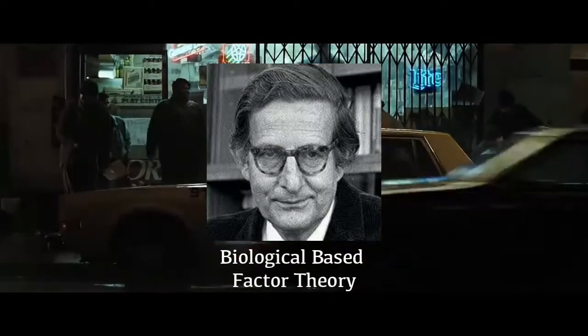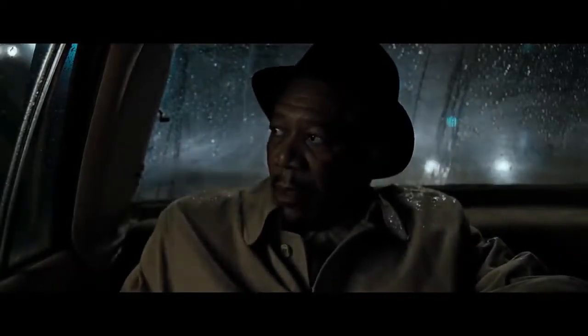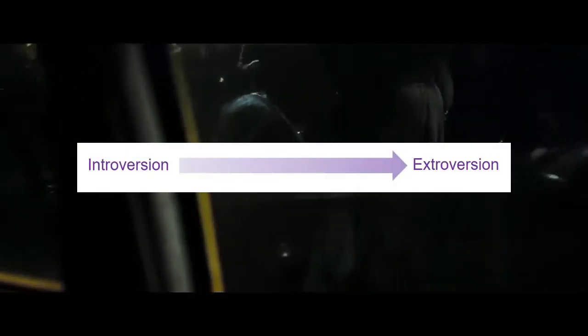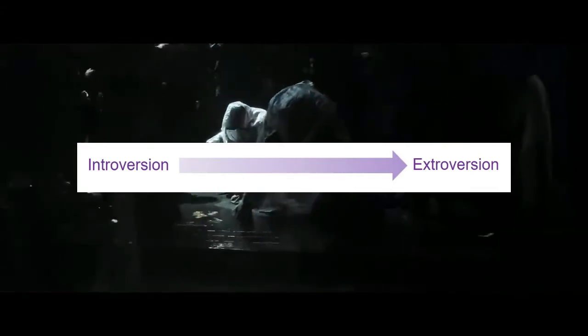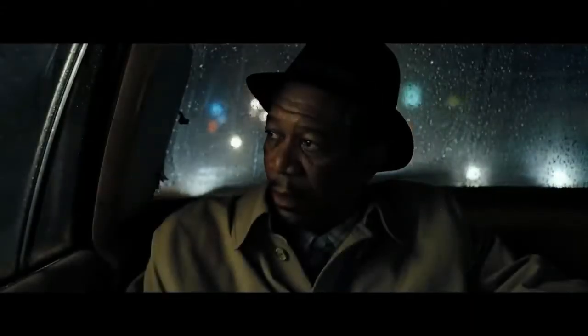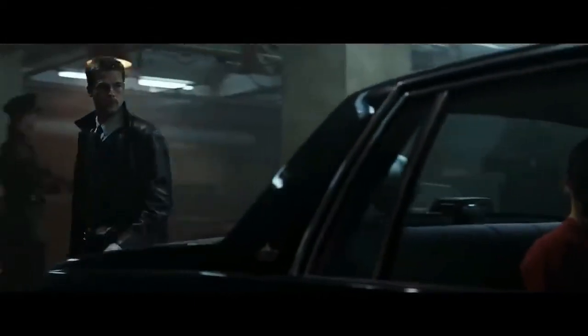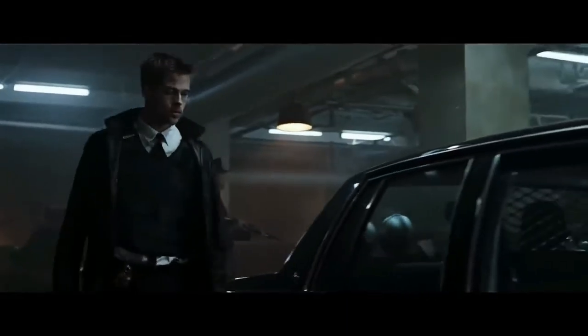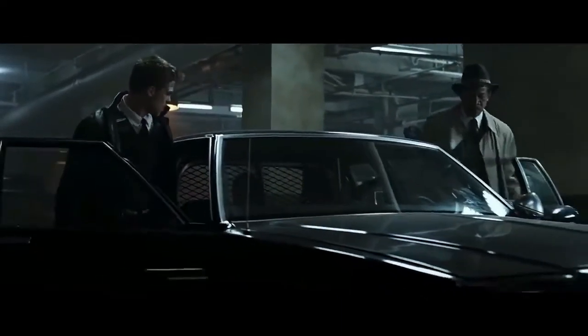We can also analyze John Doe through Eysenck's biological-based factor theory, which is backed up by biological evidence in determining personality types using factors on a bipolar spectrum. For extraversion versus introversion, he leans more towards introversion, since he is very quiet, reserved, and controlled, and he uses his notebooks as an outlet instead of socializing. This is because he is more reactive and sensitive than others towards even the most minute sins observed in daily life.